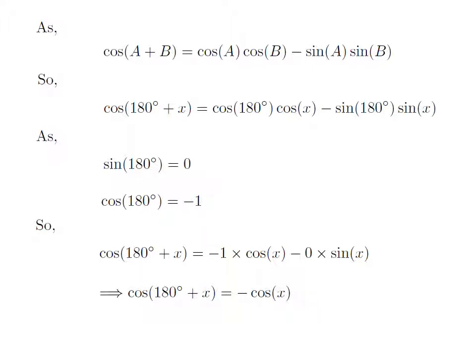So, cosine of 180 degrees plus x is equal to minus cosine of x minus 0, which is equal to minus cosine of x. Therefore, the value of cosine of 180 degrees plus x is equal to minus cosine of x.